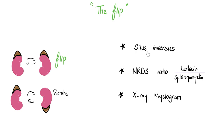Other flips in medicine: situs inversus, where visceral organs are inverted — liver on the left, spleen on the right, heart apex possibly on the right. Also, the lecithin-to-sphingomyelin ratio: normally lecithin should be greater than sphingomyelin, ratio two or more. If there is no surfactant, the ratio can drop to one or less than one — another flip — suggesting respiratory distress syndrome.